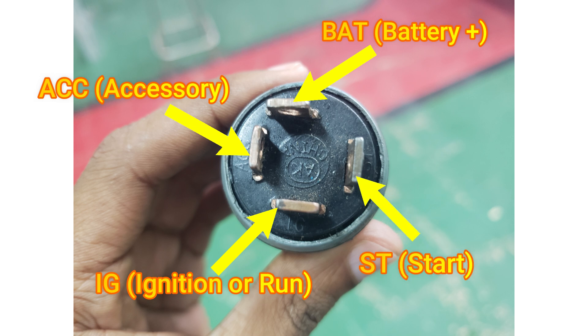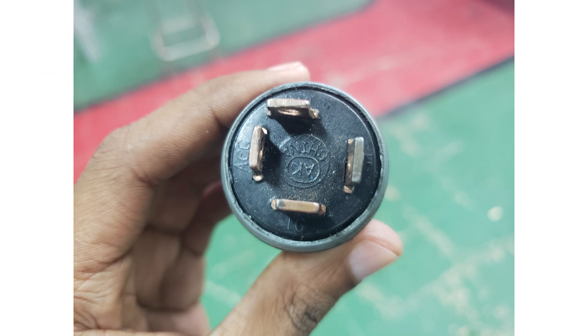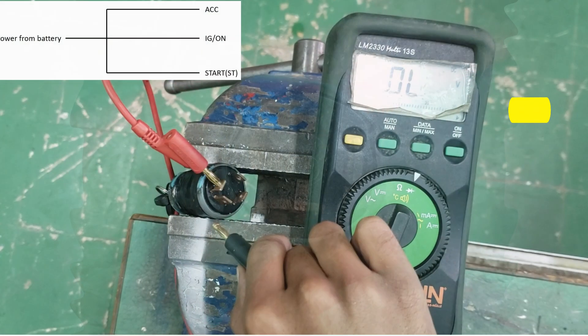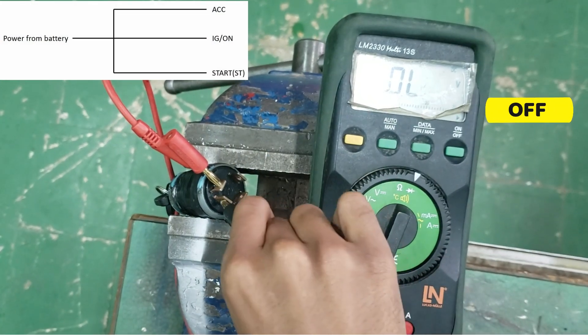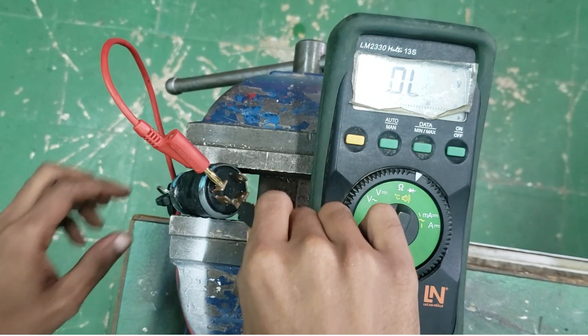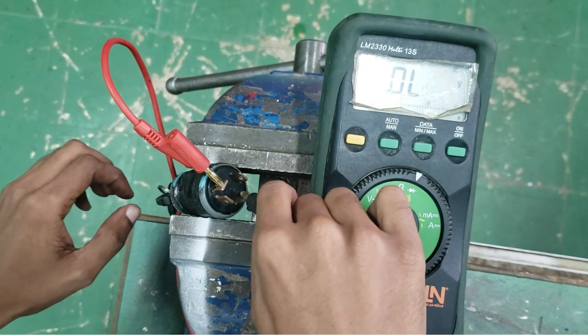The off setting on a vehicle's ignition switch is self-explanatory, indicating that all circuits are turned off completely. This means that no power is being supplied to any electrical components in the car.